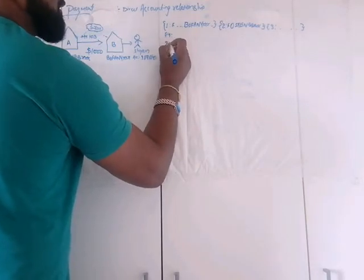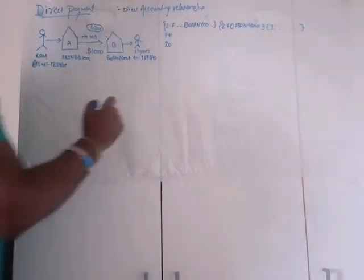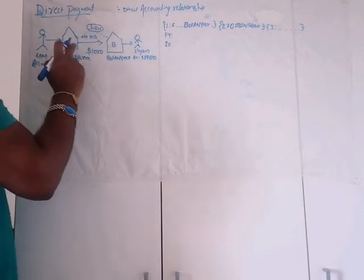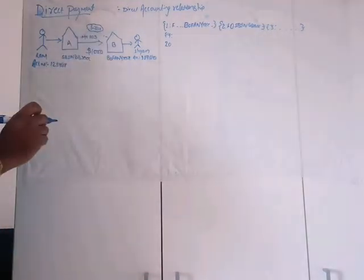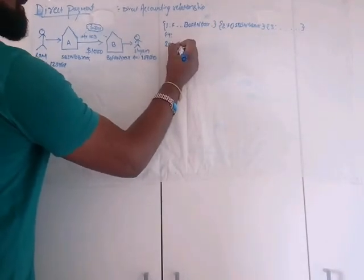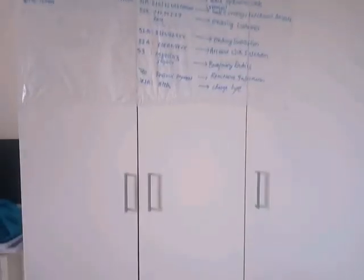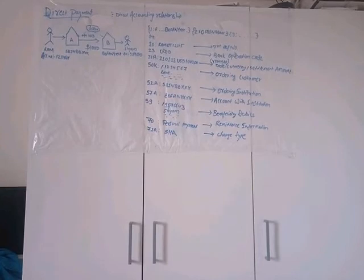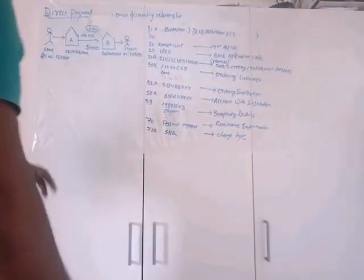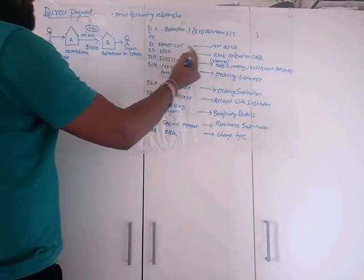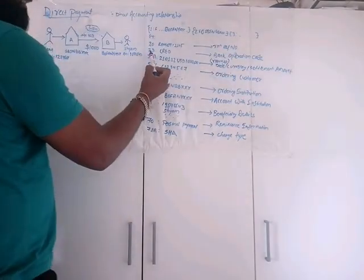Tag 20 is the transaction reference number. When bank A sends a transaction to bank B with MT103, it also sends a transaction reference number. In our case, bank A is sending reference number RRAMOT12345.